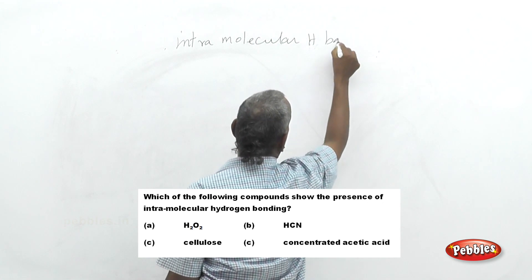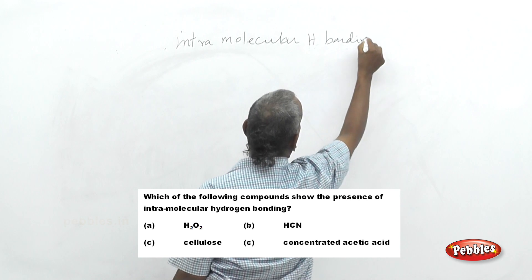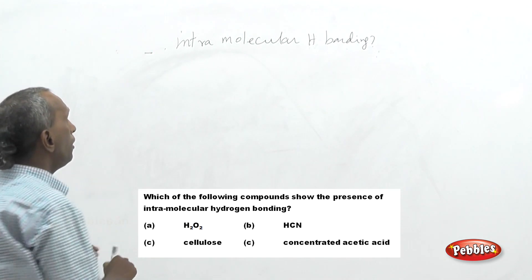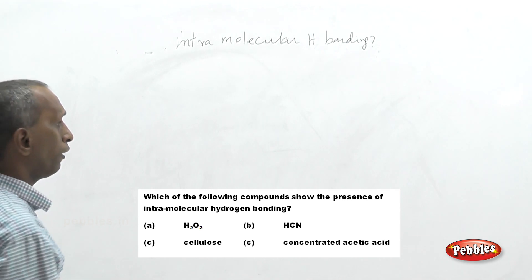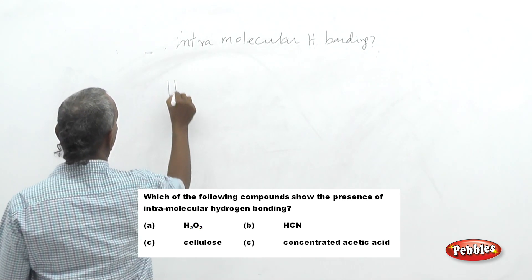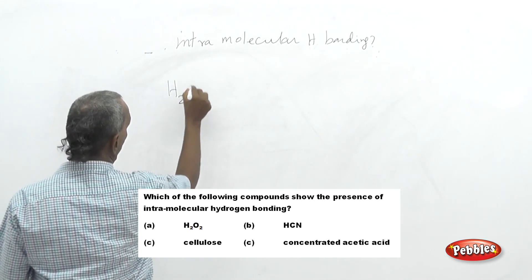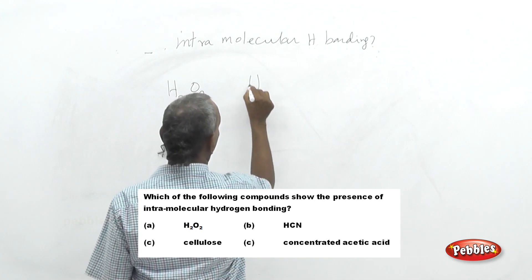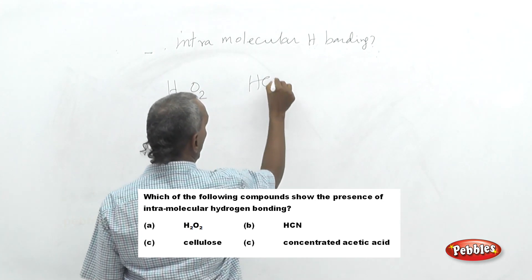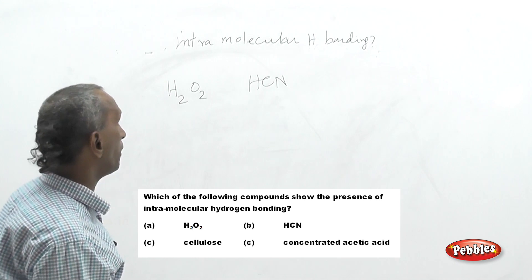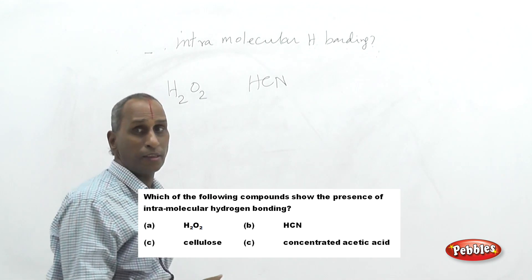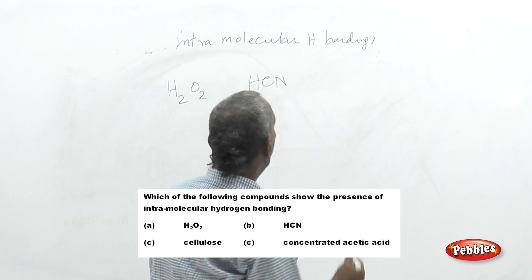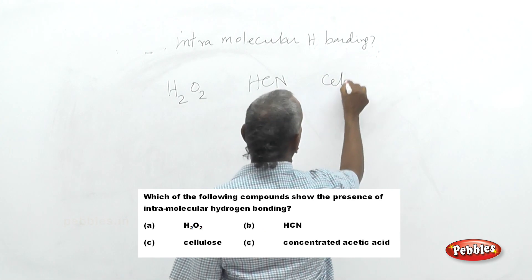Four choices are given: first, hydrogen peroxide (H₂O₂); second, hydrogen cyanide (HCN); third, cellulose; fourth, concentrated acetic acid (CH₃COOH). We need to identify which species has hydrogen bonding existing within the molecule itself.